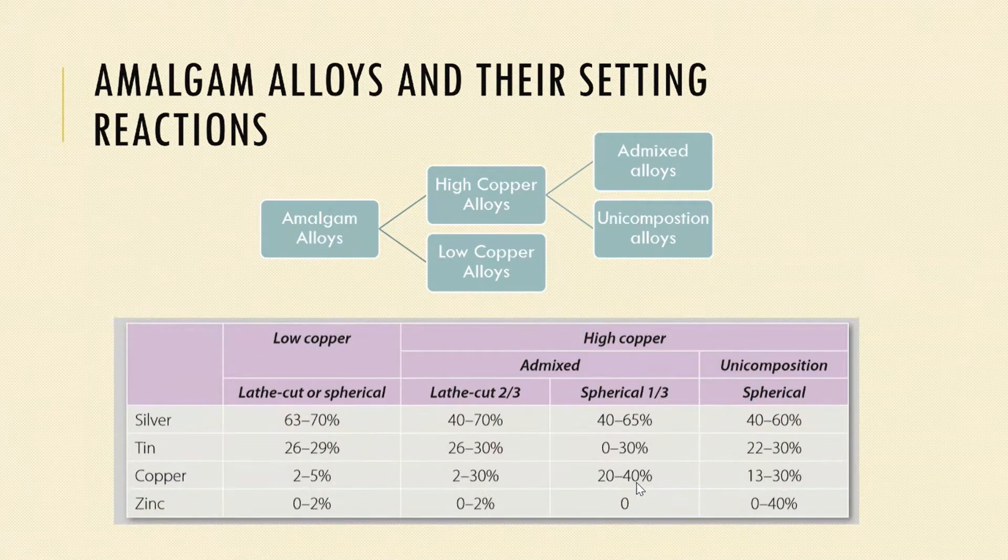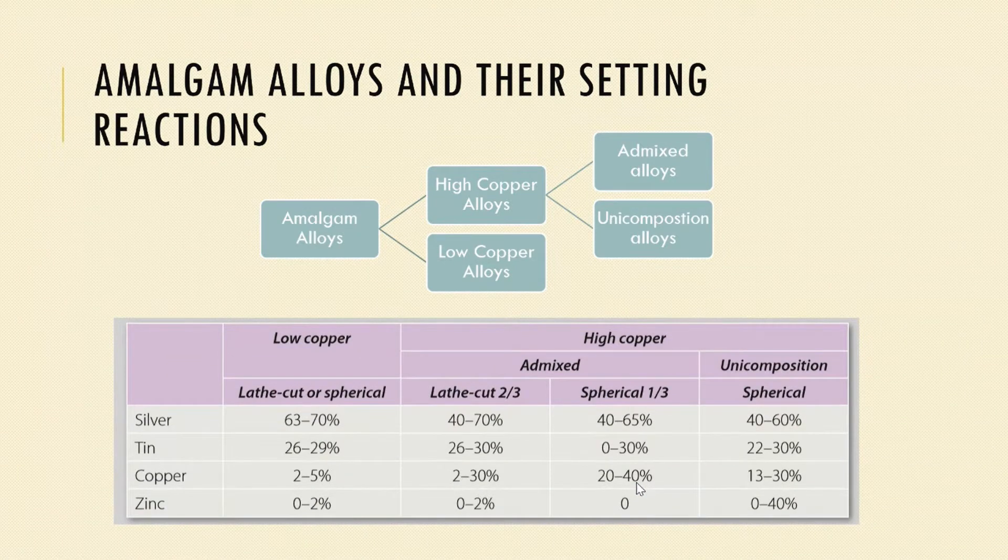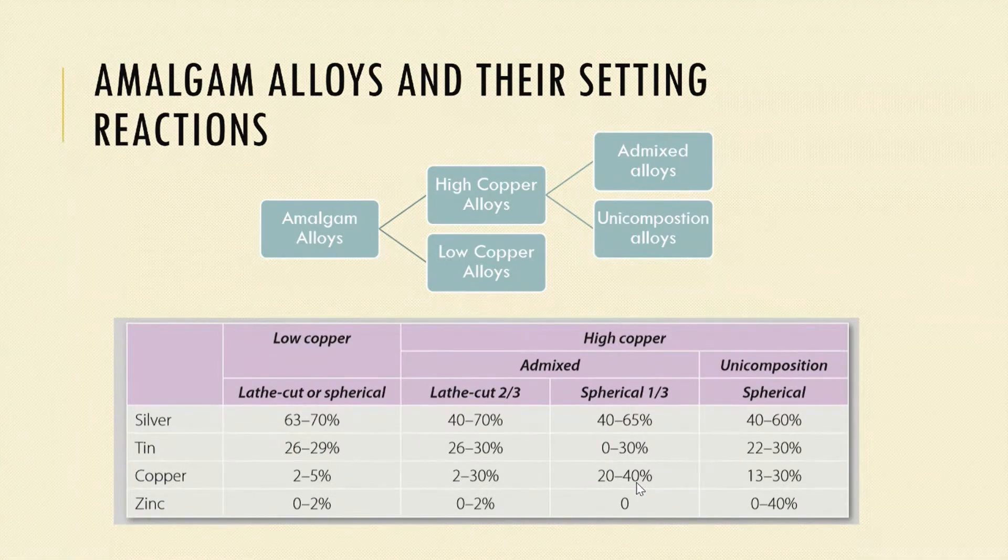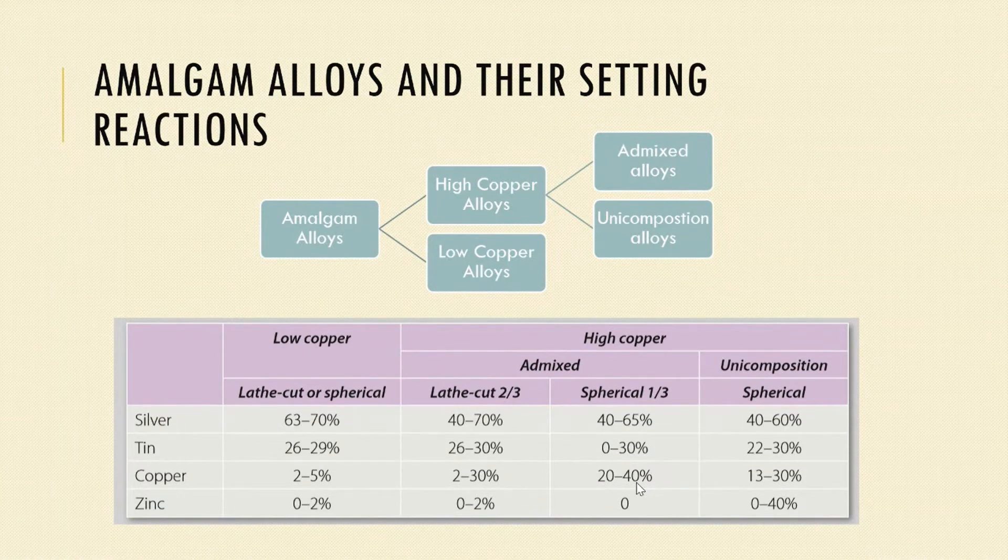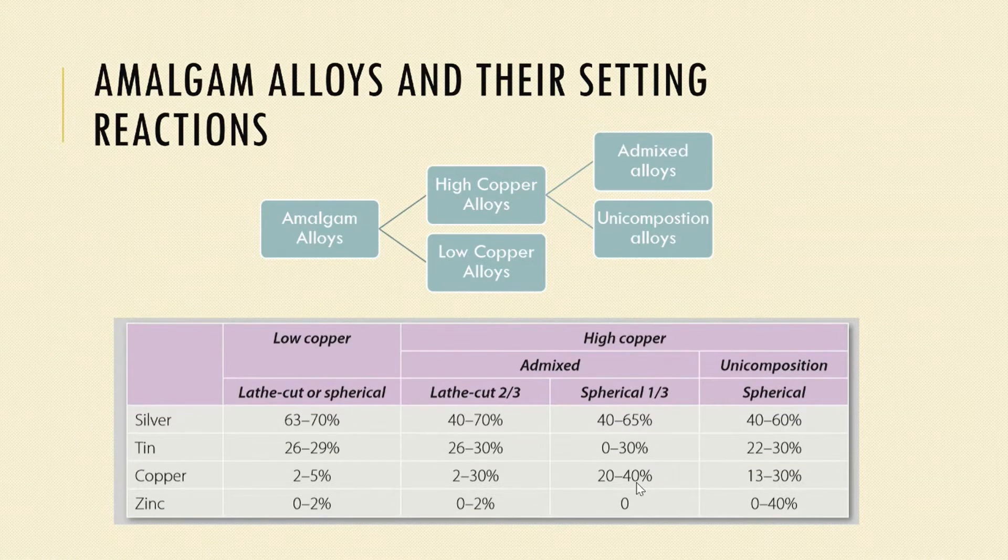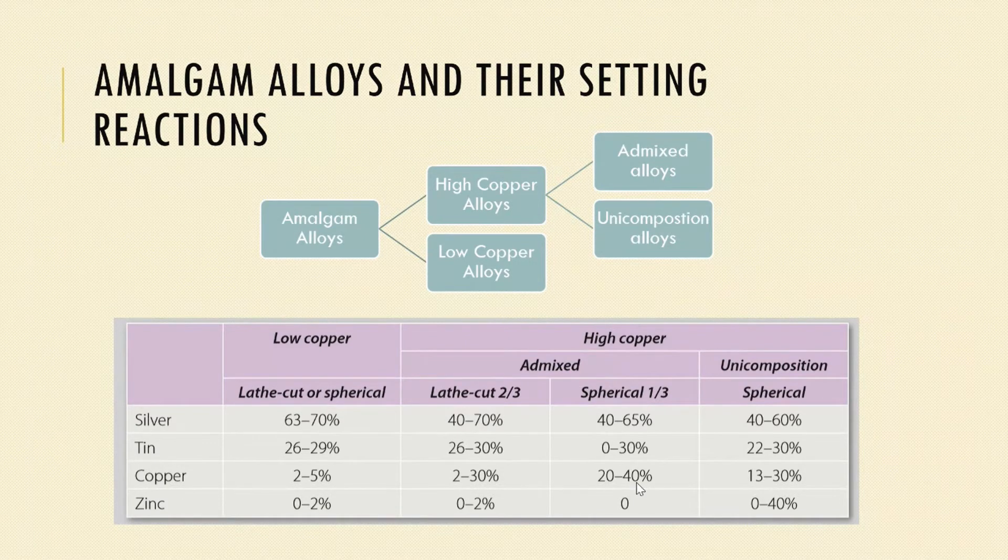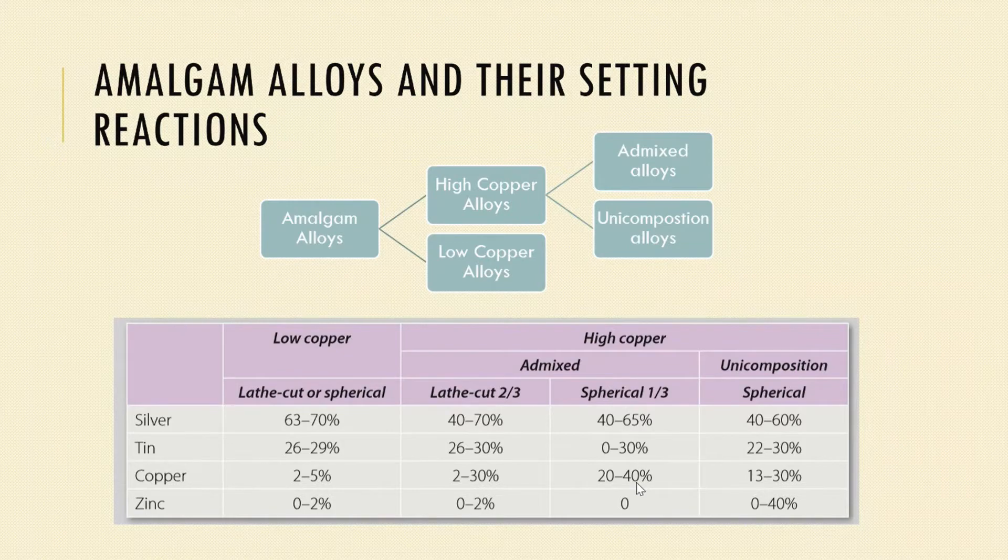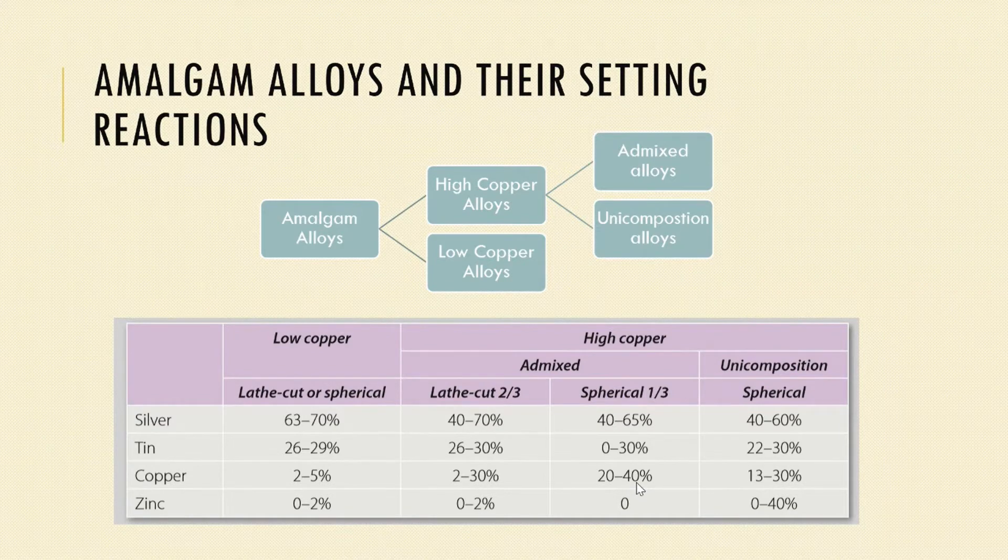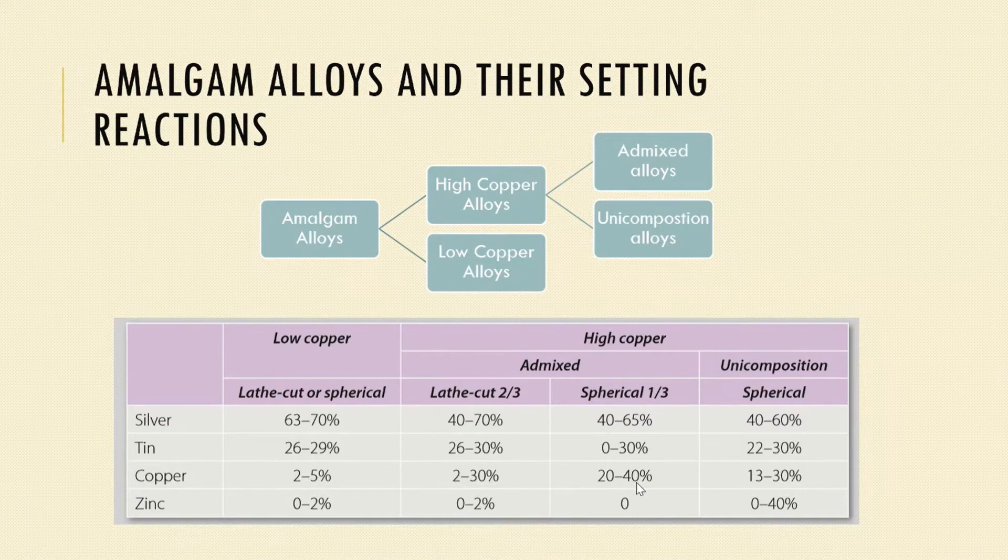If we take a look at the composition of these alloys, the low copper alloy consists of 70% silver and 29% tin. The high copper admixed alloy consists of 65-70% silver, 30% tin, and 30-40% copper. The unicomposition alloys consist of 60% silver, 30% tin, and 30% copper.